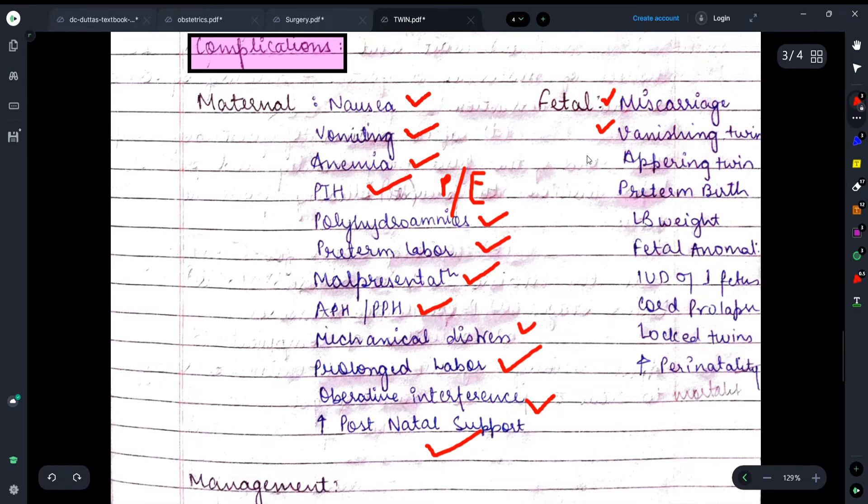Sometimes appearing twin - the mother didn't know she was twin pregnant, and during pregnancy or during delivery she comes to know. Preterm birth, low birth weight baby - just because the female has two fetuses, there are chances that she is not getting proper nutrition, due to which this is seen. Sometimes anomalies can be seen in the fetus.